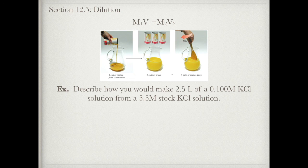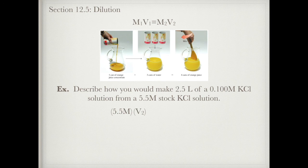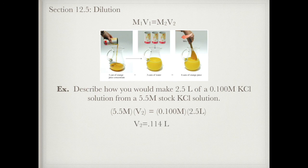Here's an example: make 2.5 liters of a 0.100 molar KCl solution from a stock solution that is 5.5 molar. Using M1V1 = M2V2, M1 is 5.5 molar (the concentrated solution) and V1 is what I need to find. That equals 0.100 molar times 2.5 liters. Solving for V1 gives 0.114 liters of my concentrated stock solution.